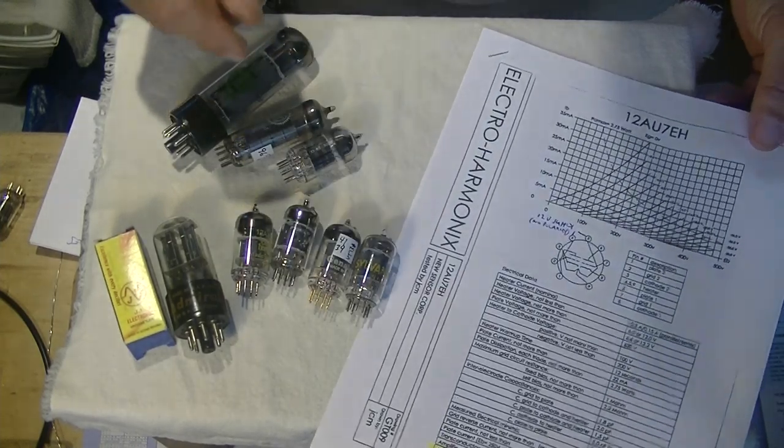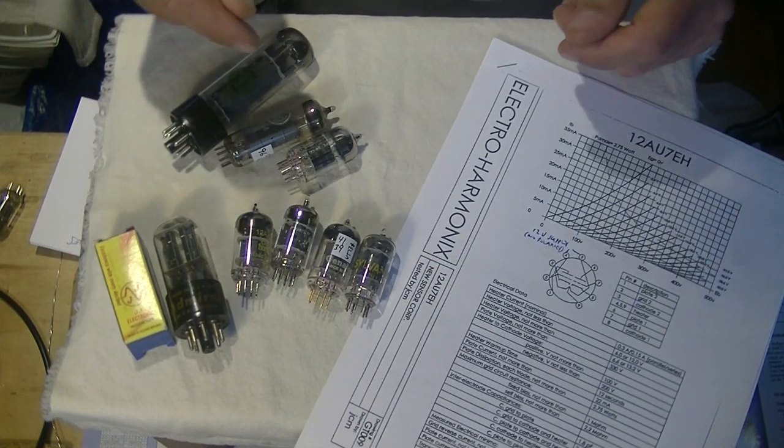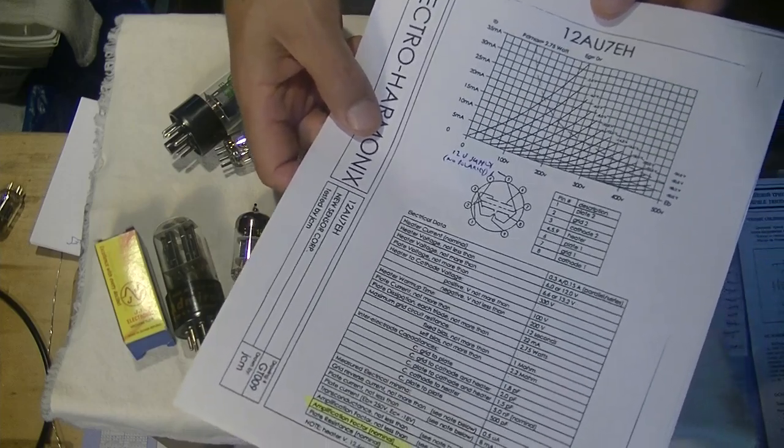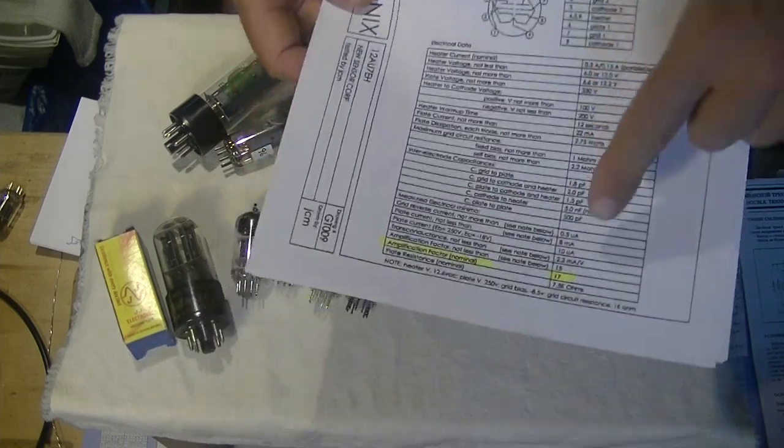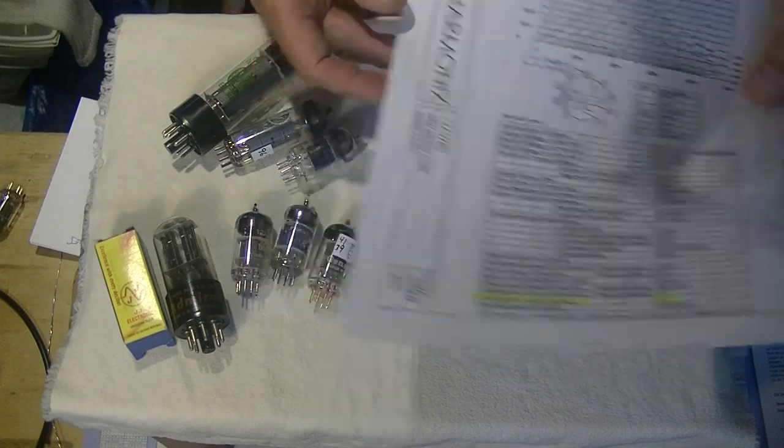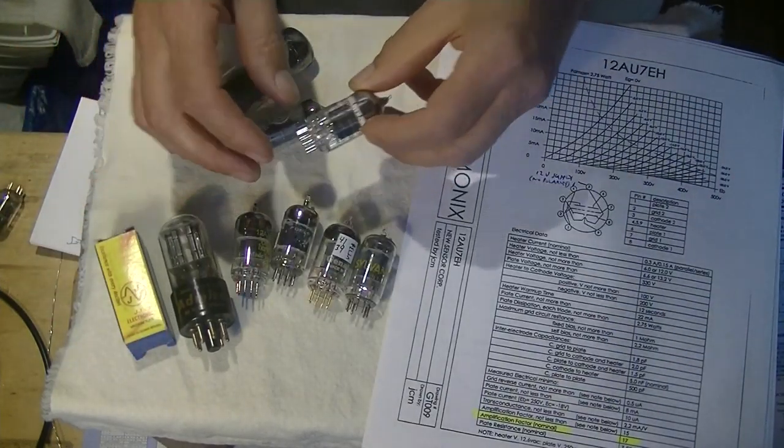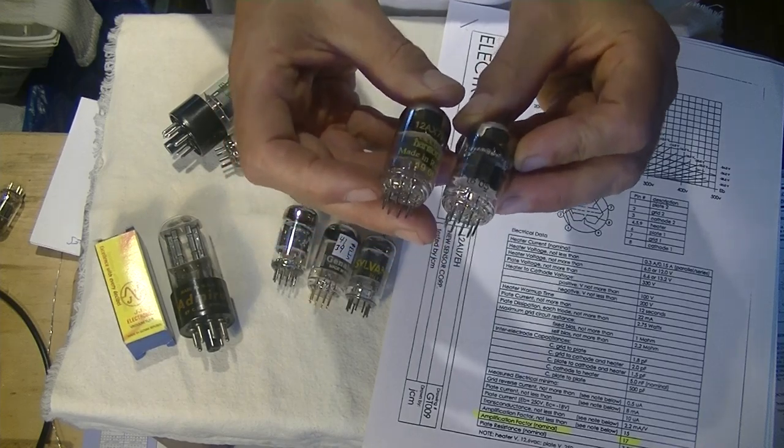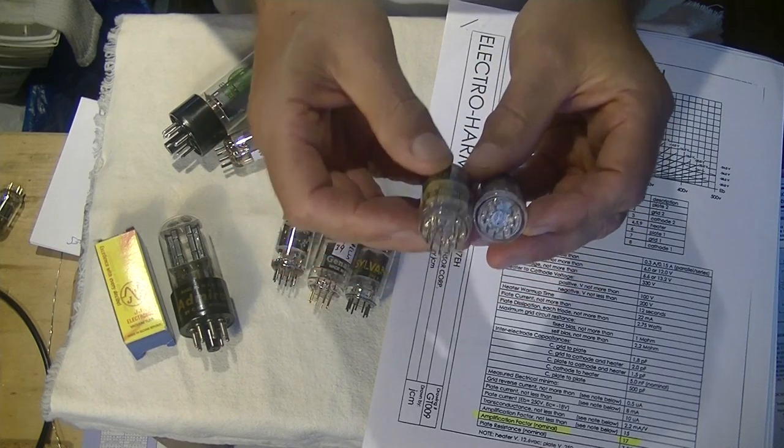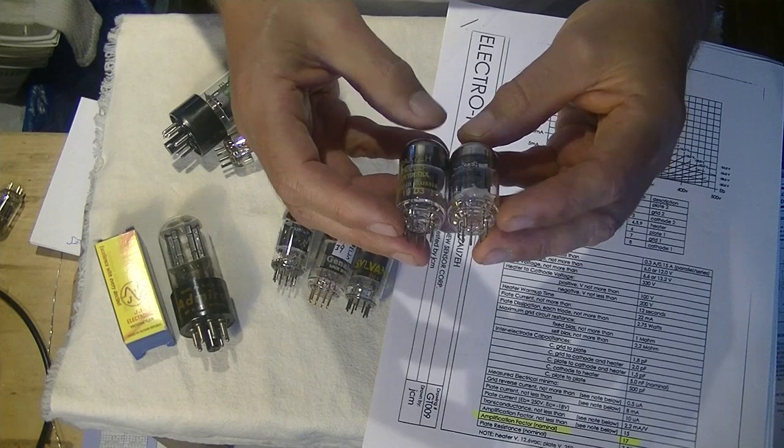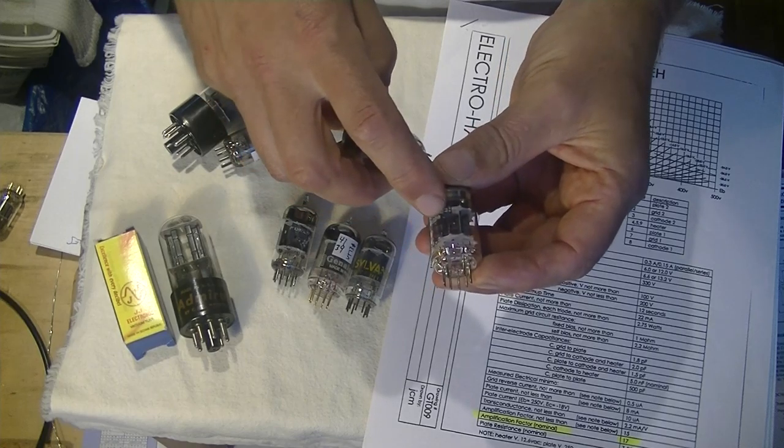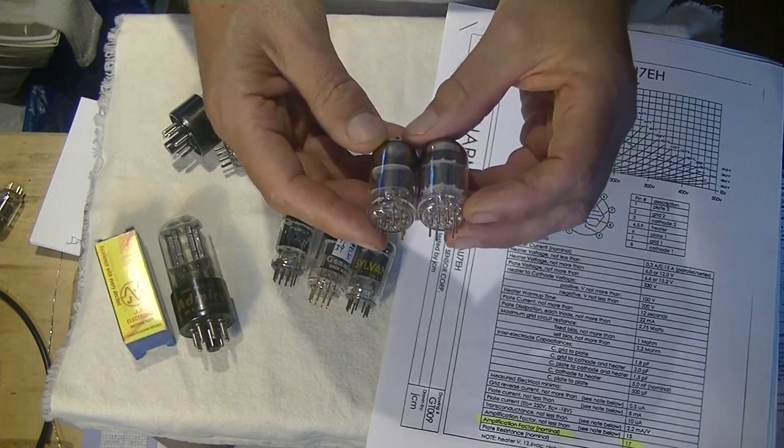So the 12AX7 is part of a large series of tubes that are modern small signal tubes. And the 12AU7 is another very common tube. It has a much lower amplification factor. We normally would say nominally a 20 to 1. And here the spec sheet says 17. So what does a 12AU7 look like? Well, it looks exactly like a 12AX7. The pins all go to the same connections electrically. The glass envelope is the same. But when you get to know more about tubes, you can see there's two plates inside. So two circuits, two tubes, a dual triode.